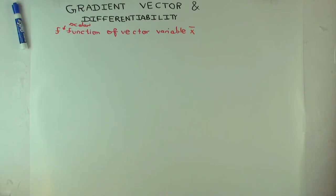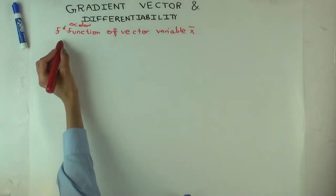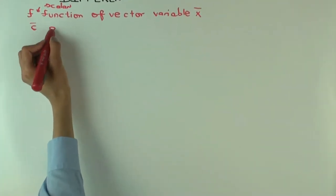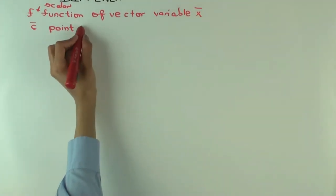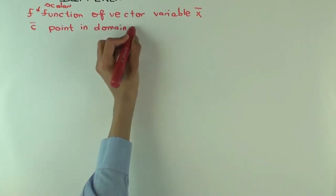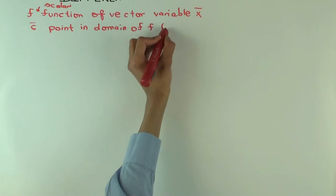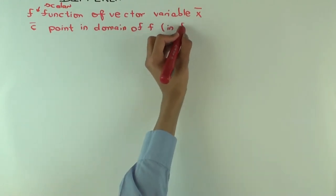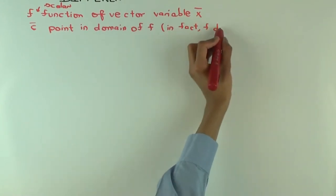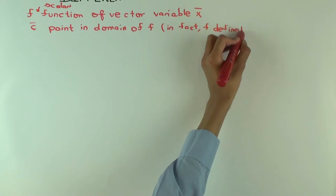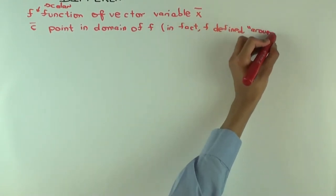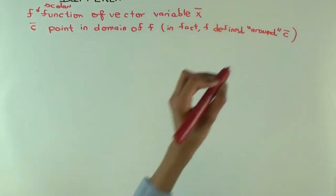We'll do what the derivative is at a point. So derivative at a point c, so c is a point in the domain of f, and in fact, c has to be in the interior of the domain. So f should be defined around c. What do I mean by that?